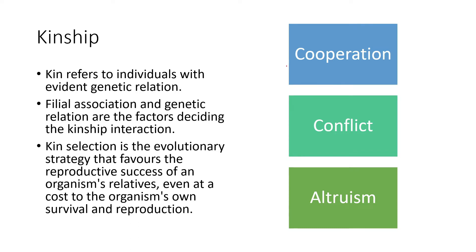Within kinship, among different individuals, there are multiple aspects: cooperation, conflict, and altruism. Cooperation refers to the fact that multiple individuals deal with each other in a positive, mutually beneficial manner — working for each other and with each other. In a family there are also different factors which raise conflicts, and that is also an aspect of kinship. Then comes altruism. Altruism is selflessness — one organism, despite incurring a personal cost, acts for the greater good of the kin.